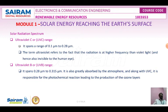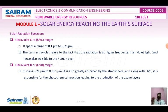UVC range spans from 0.1 micrometer to 0.28 micrometer. It is radiation at a higher frequency than violet light and is heavily absorbed by the atmosphere, so only a mere amount reaches the Earth's surface. UVB range spans from 0.28 micrometer to 0.315 micrometer, and it is responsible for the photochemical reaction leading to the production of the ozone layer.